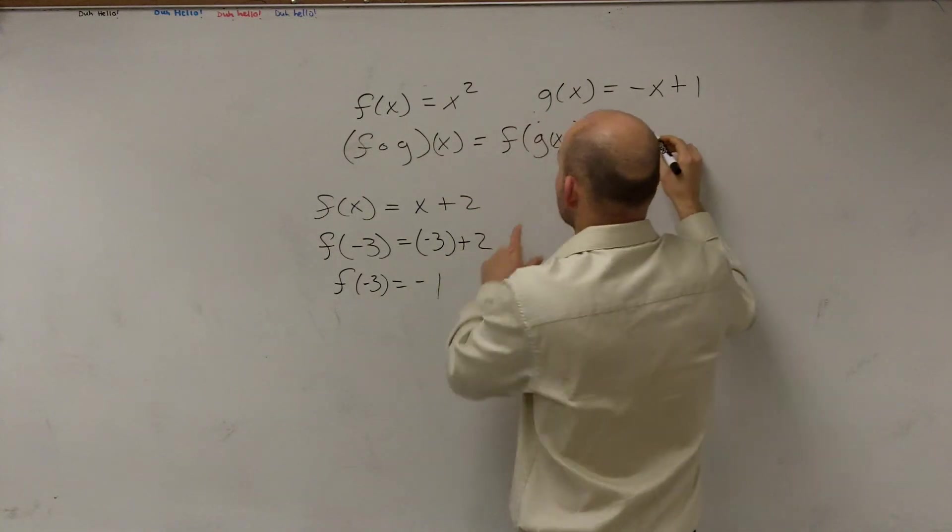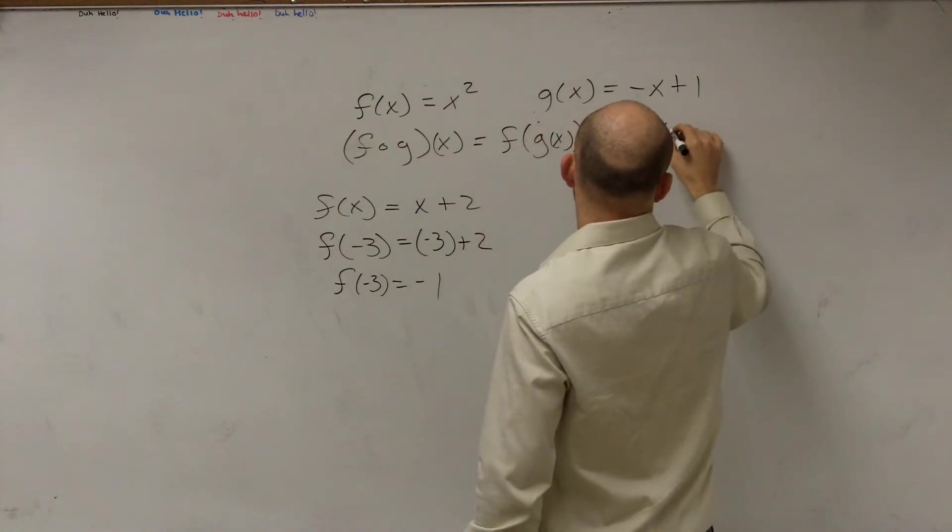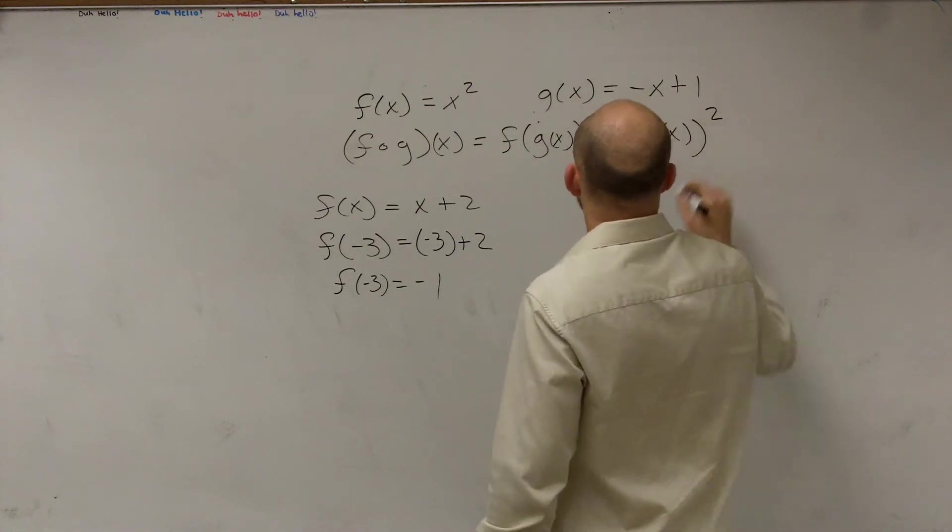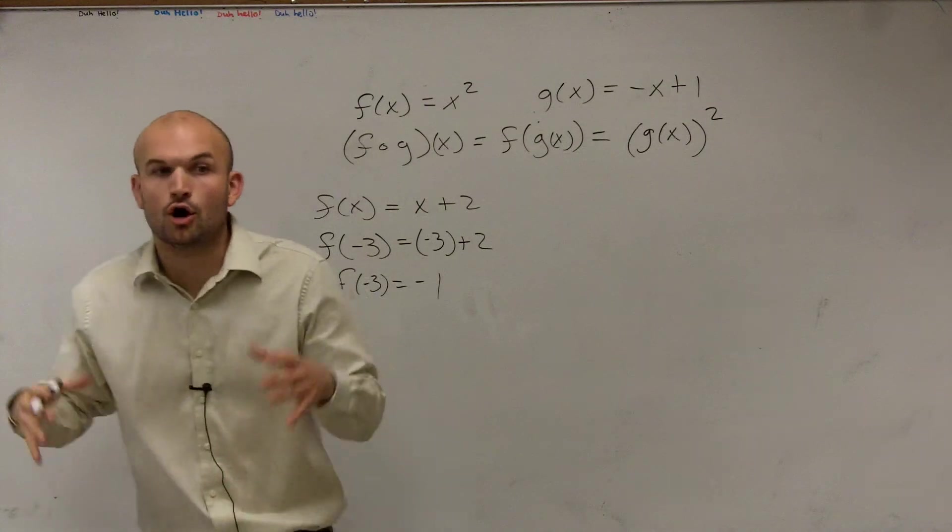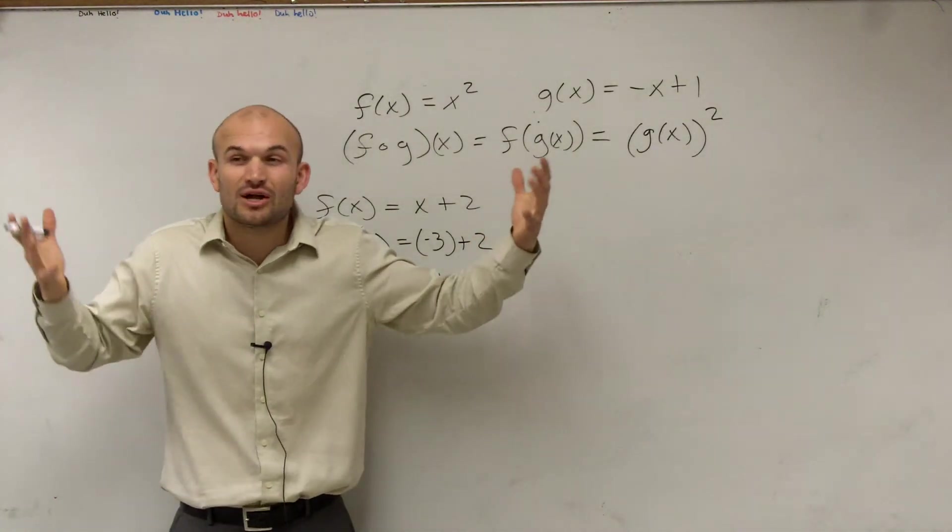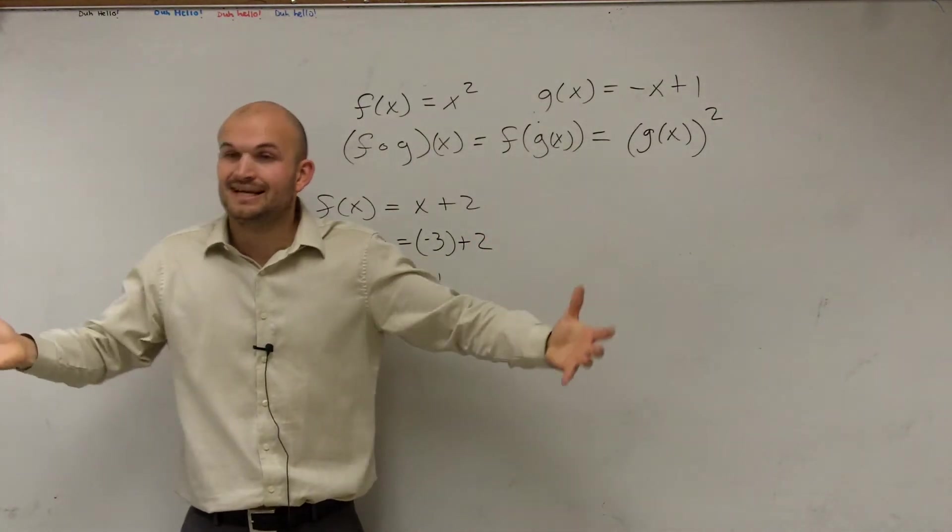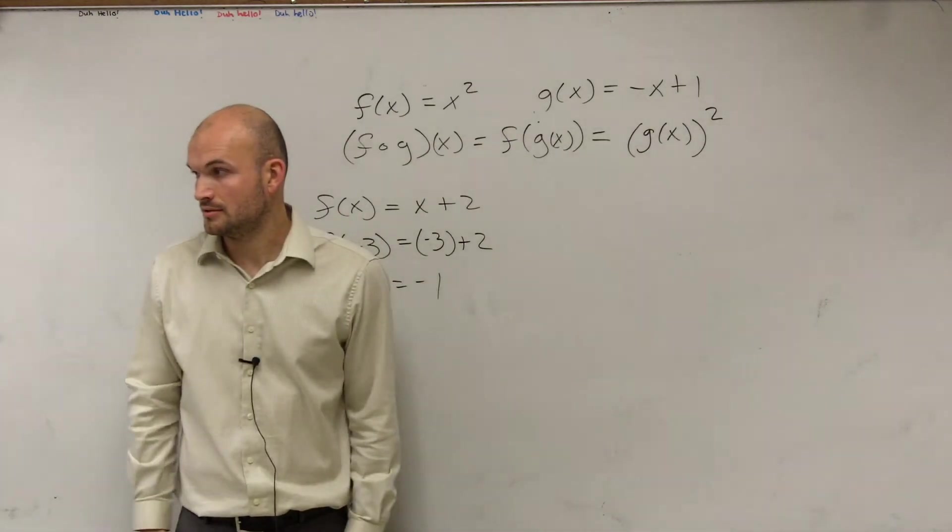So you can see it's going to look something like this. Notice just the parentheses. What I did is I plugged the whole... Rather than just the number, I plugged the whole function into the other function. Why is it like g of x squared?